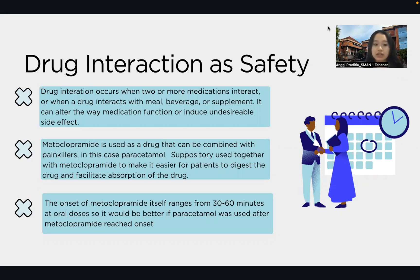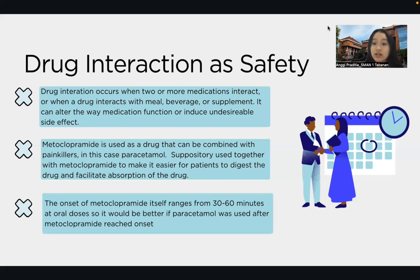In this case of Ms. Ari, she uses metoclopramide, paracetamol, and also suppository. Metoclopramide itself is used as a drug that can combine with painkillers or analgesics, in this case paracetamol. So it is safe for Ms. Ari to consume the metoclopramide and paracetamol together. The suppository is used together with metoclopramide to make it easier for the patient to absorb the drug. Ms. Ari needs to consume paracetamol after 20 to 30 minutes because the onset of metoclopramide ranges from 30 to 60 minutes at oral doses, so it is better if paracetamol is used after metoclopramide has reached its onset.